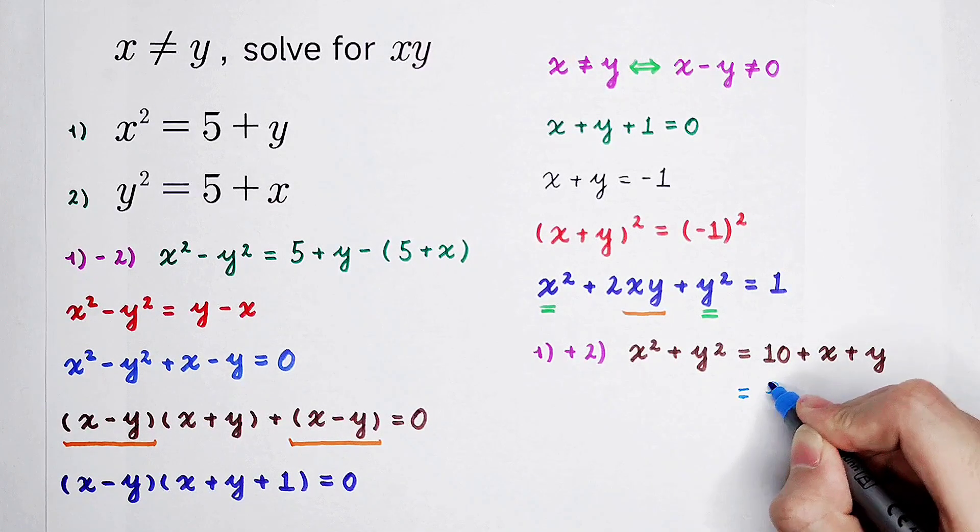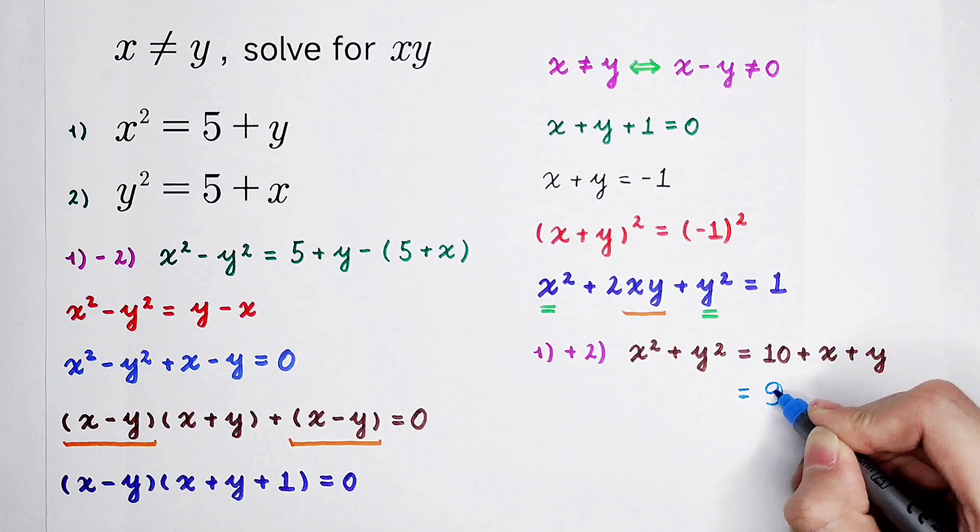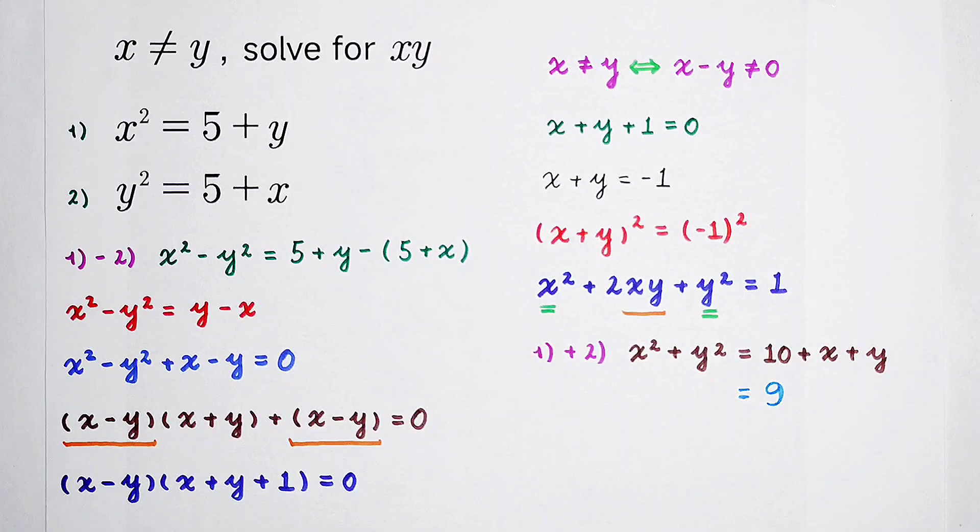So, the value of x squared plus y squared is 9. The sum of them is 9.